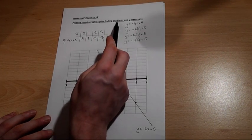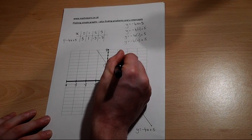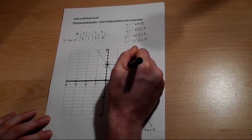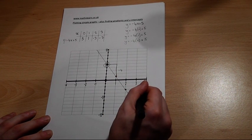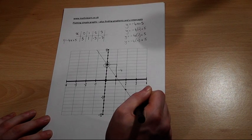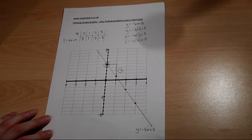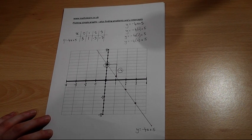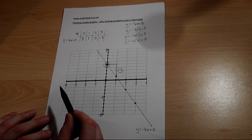And gradient. For every 1 across we go, we go down 4. Across 1, down 4. Across 1, down 4. This has got a gradient of minus 4. And the gradient is always given by the number before the x, the coefficient in the equation.